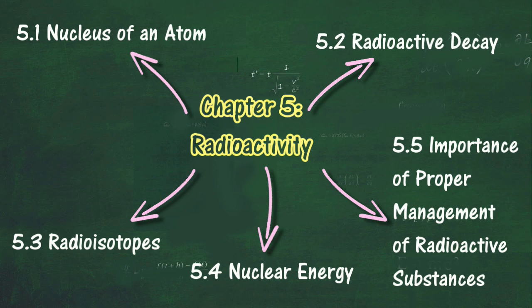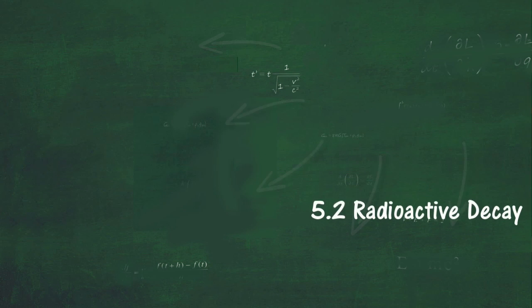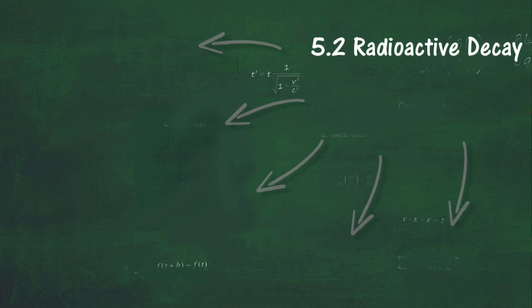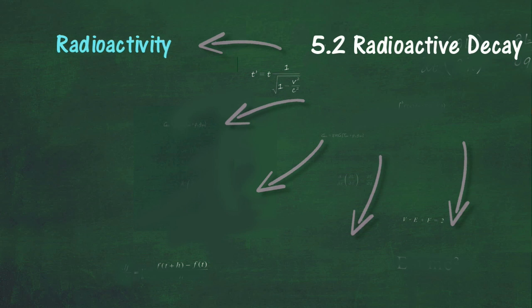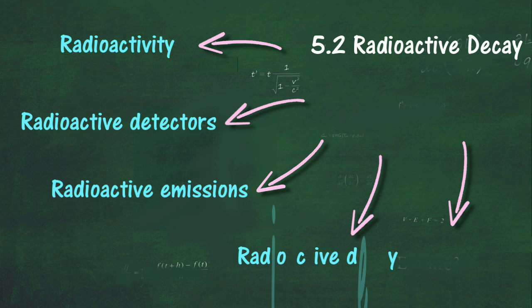In Section 5.2, we will learn about radioactive decay. At the end of this section, you should be able to state what radioactivity is, name common detectors of radioactive emissions, compare the three kinds of radioactive emissions in terms of their nature, explain what radioactive decay is, use equations to represent changes in the composition of the nucleus when particles are emitted, explain half-life, determine half-life from a decay curve, and solve problems involving half-life.